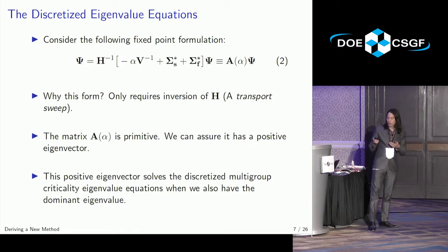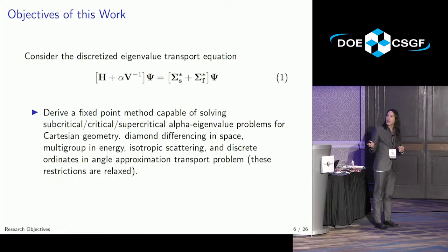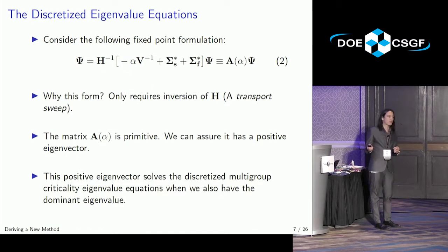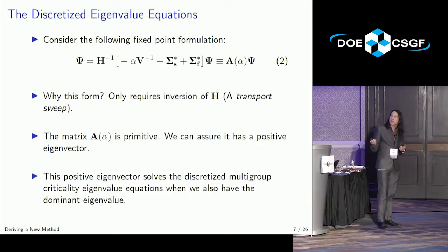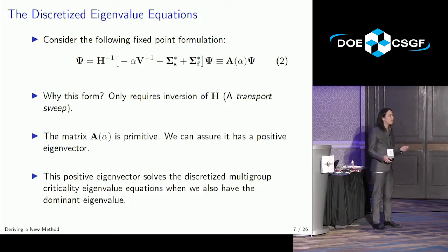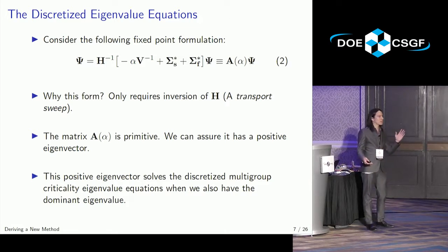Consider the following fixed-point formulation in equation two. If you rewrite this equation one into some sort of fixed-point formulation, you can get this form. So why do we pick this specific form? There is a logic to it. In traditional neutron transport codes, you actually never form these matrices, because these are incredibly large systems of equations. Instead all you have is the action of a matrix on a vector. This H inverse, what I represent as a matrix inversion, is actually done by what's called a transport sweep, where you actually sweep across your domain in space, energy, and angle.